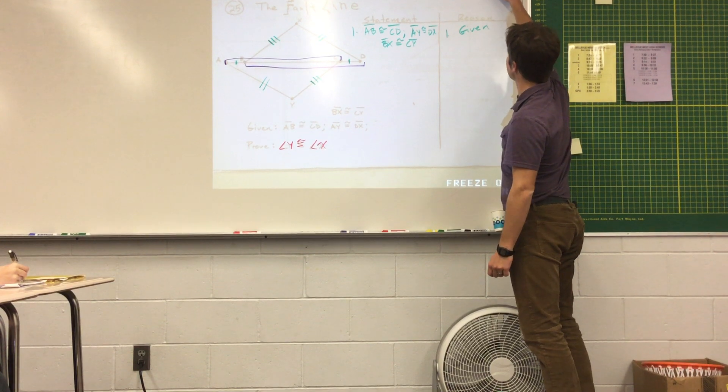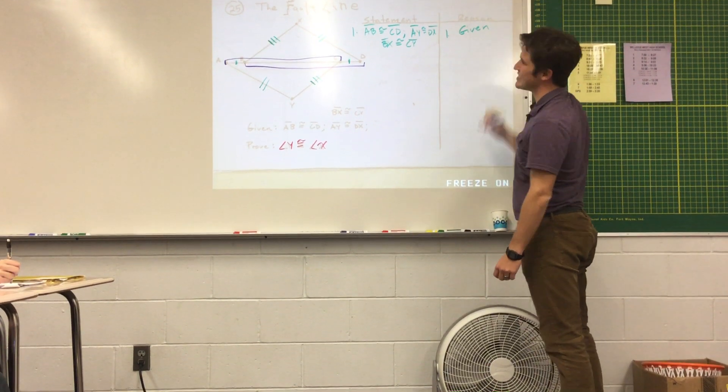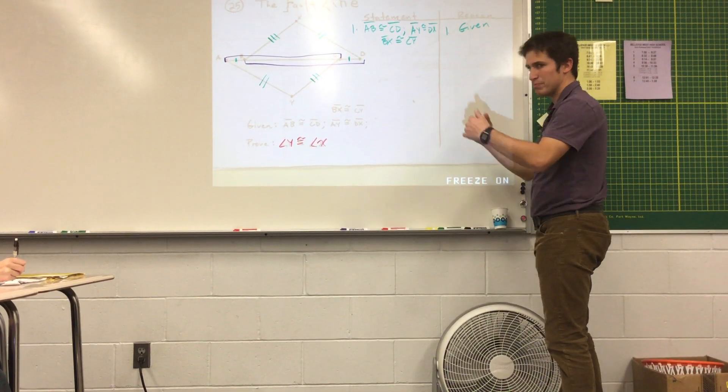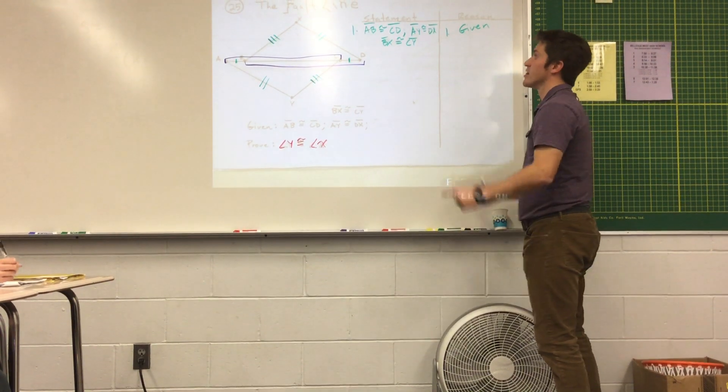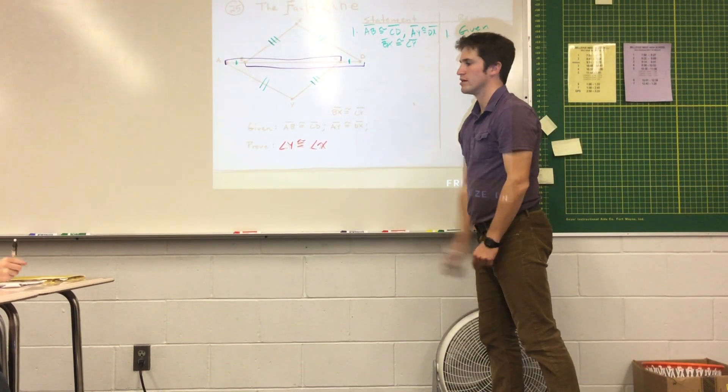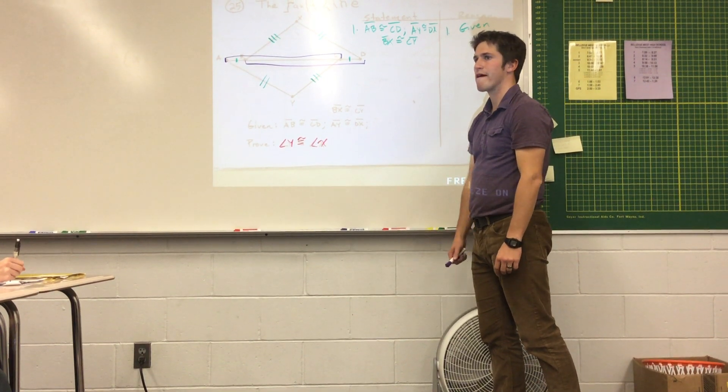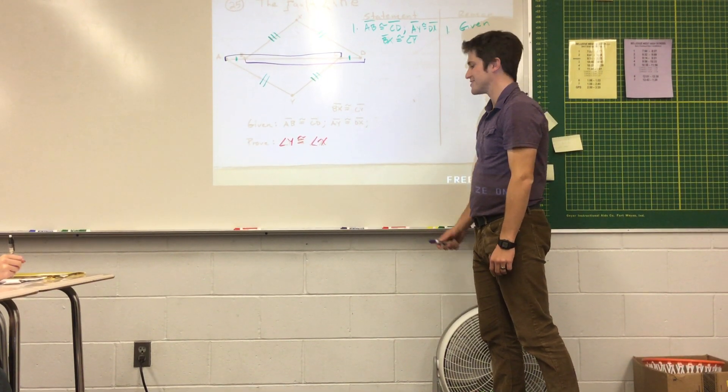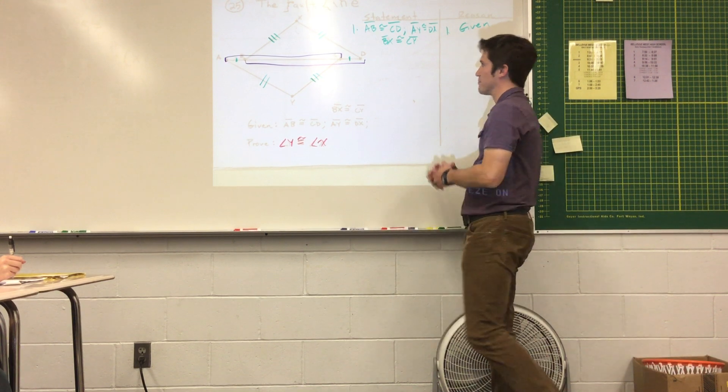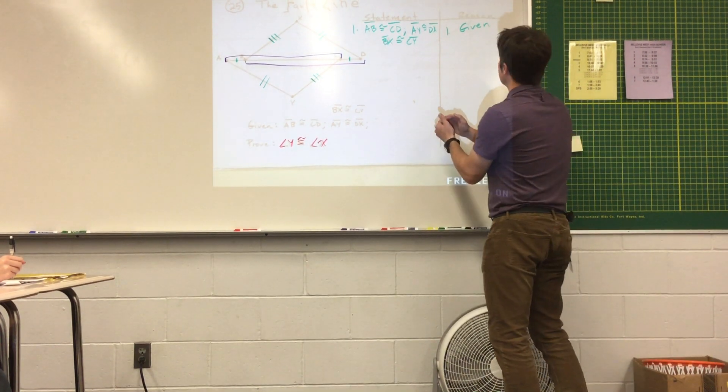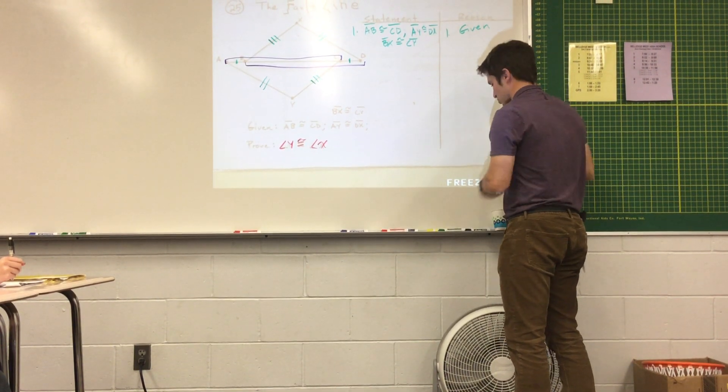If I could just show that AC is congruent to BD, then I would be able to say that the triangles are congruent. Then I would be able to say that the angles are congruent. What's my very last reason going to be? CPCTC. Okay. So let's go to work on making, to see if we can say that AC is congruent to BD.